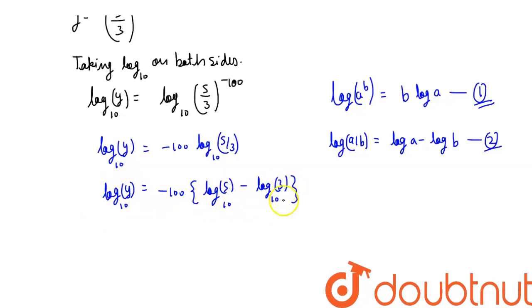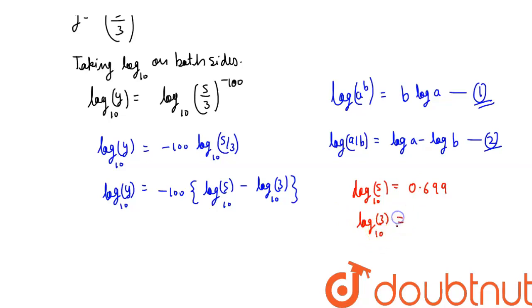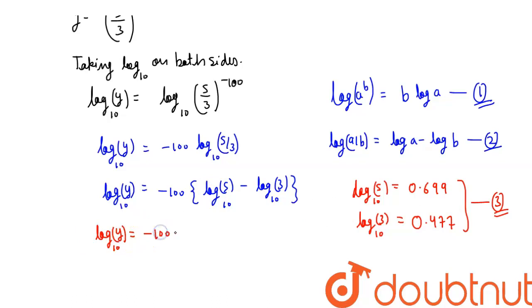We now substitute the known values: log₁₀(5) = 0.699 and log₁₀(3) = 0.477. So we get log₁₀(y) = −100 × (0.699 − 0.477).